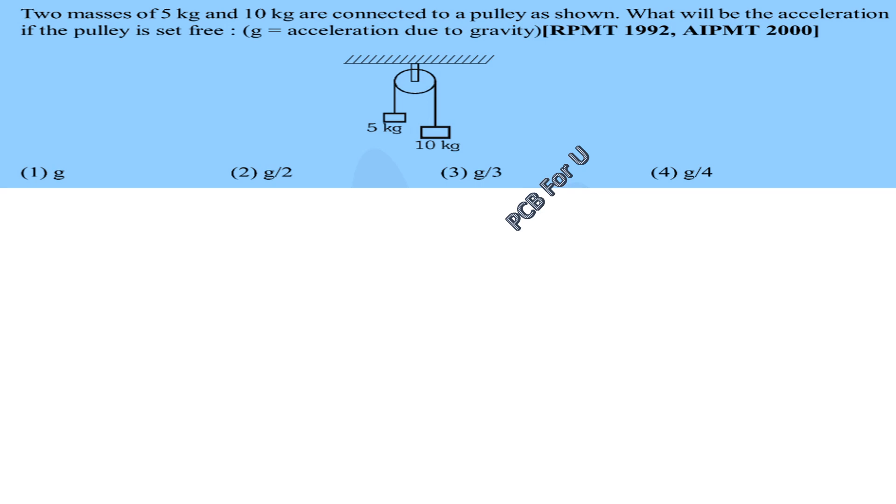The diagram has two masses connected. Here we have 5 kg, the mass is 5 kg. Here we have 10 kg.